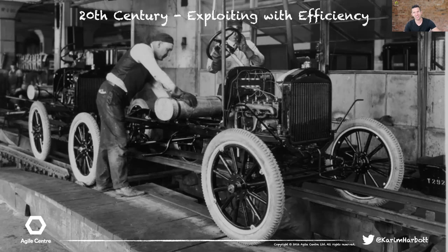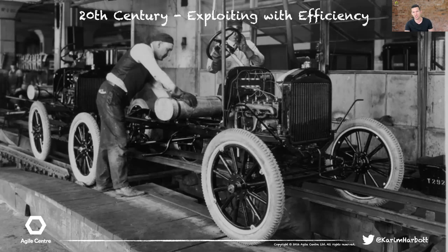Take the Model T: Ford succeeded because of an innovation in how they delivered it — the moving assembly line. Assembly of 3,000 parts went from 12 hours to 90 minutes; the price dropped from $850 to $300. By 1927, one in every two cars sold was a Model T. That focus on productivity, efficiency, and driving down costs of what they already did made them one of the biggest car companies on the planet.